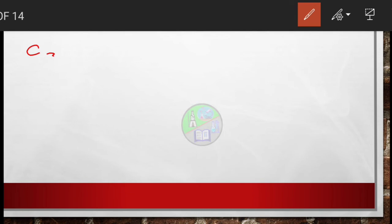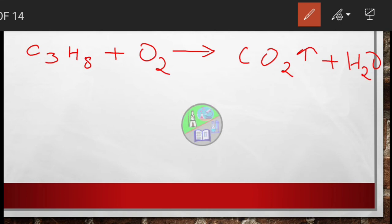Let's take another example. Suppose I will take C3H8 reacts with oxygen to give carbon dioxide gas and water. So here first of all, we will have to see the number of atoms of each element present on both the sides. So in the reactant side, number of carbon atoms present is 3, hydrogen is 8, and oxygen is 2.